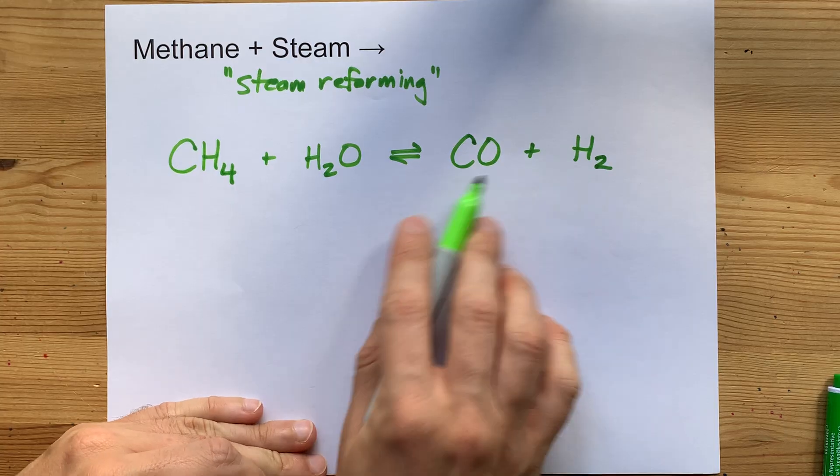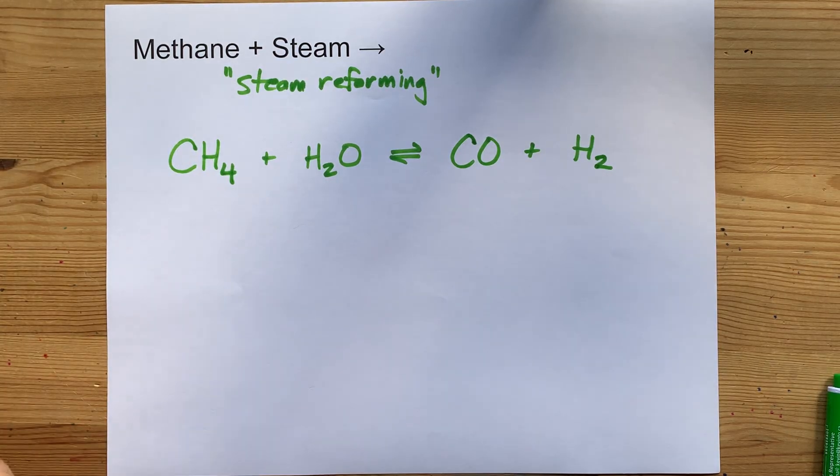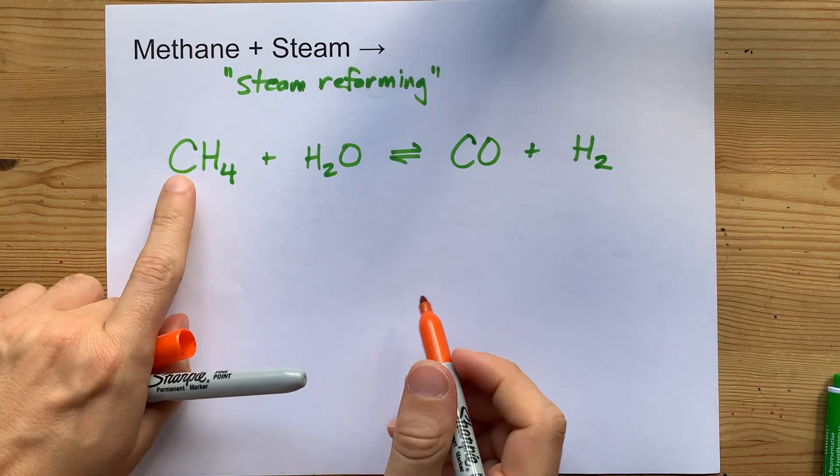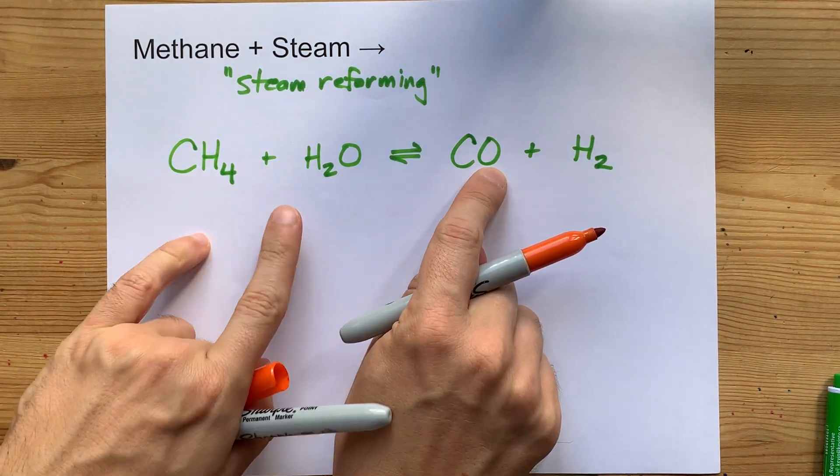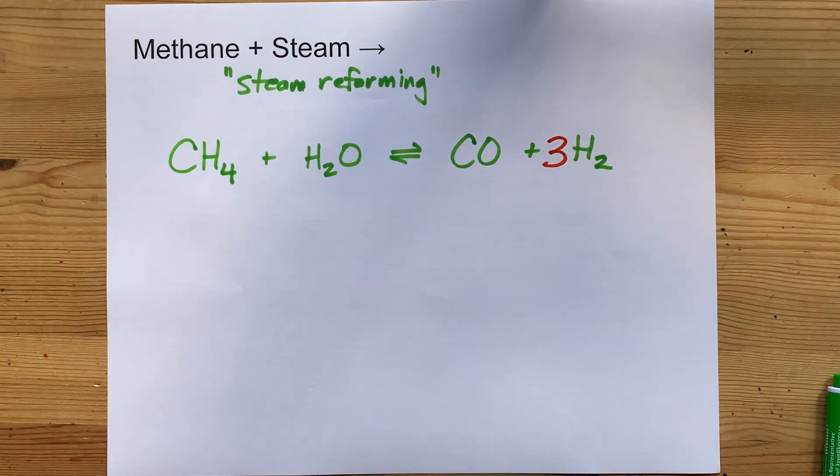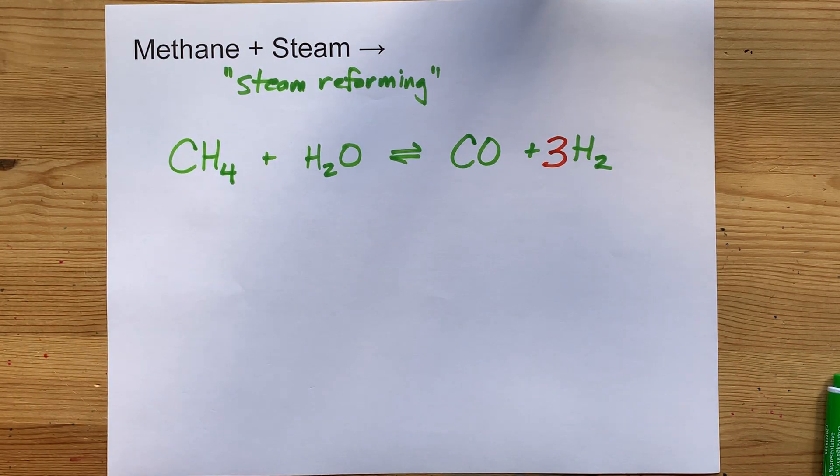You'll see that the hydrogens came from the water and the methane together. In fact, when you balance this, one carbon, one oxygen, six hydrogens will yield you three hydrogen molecules from that process.